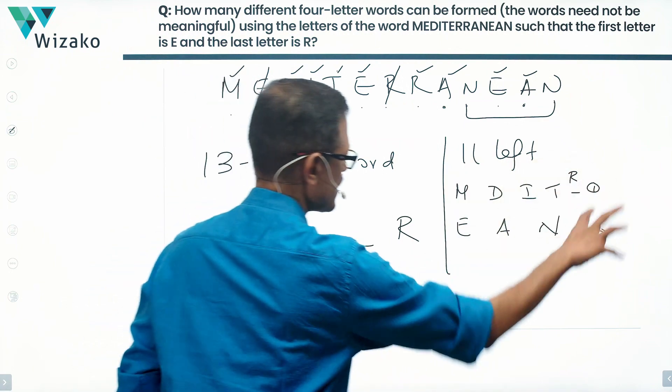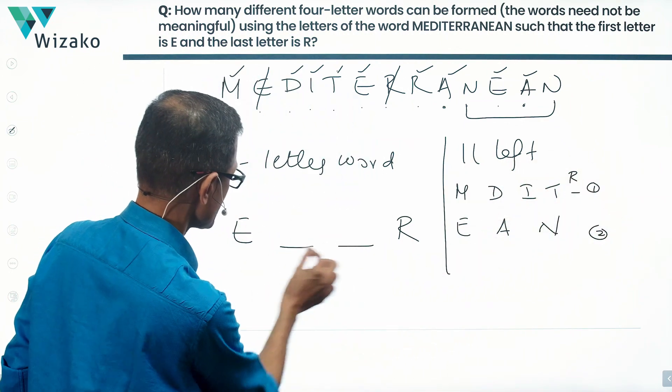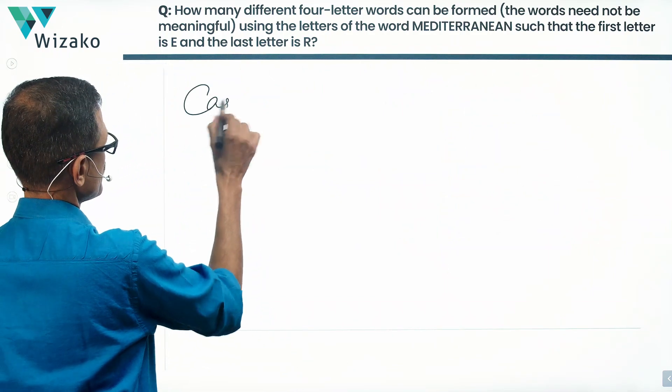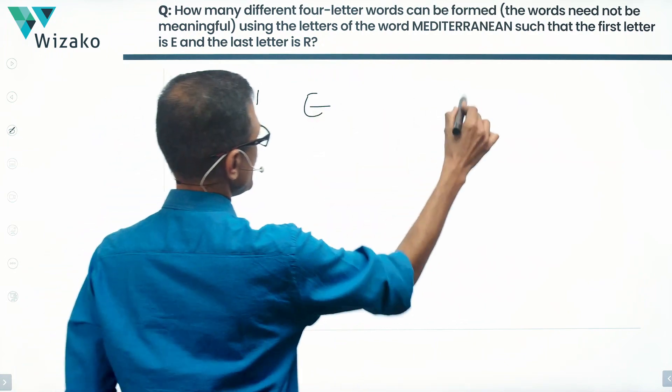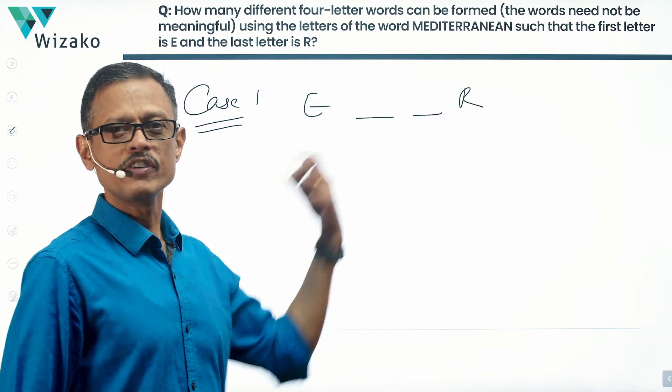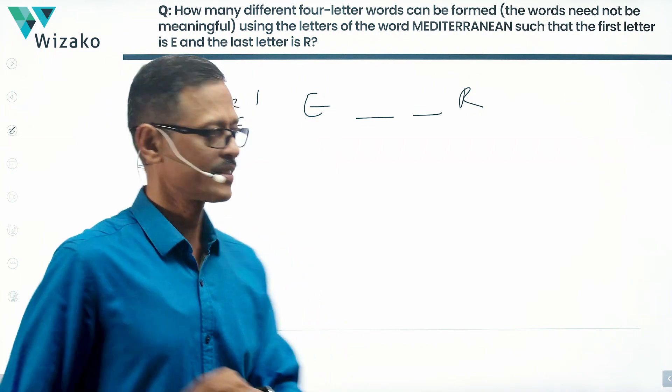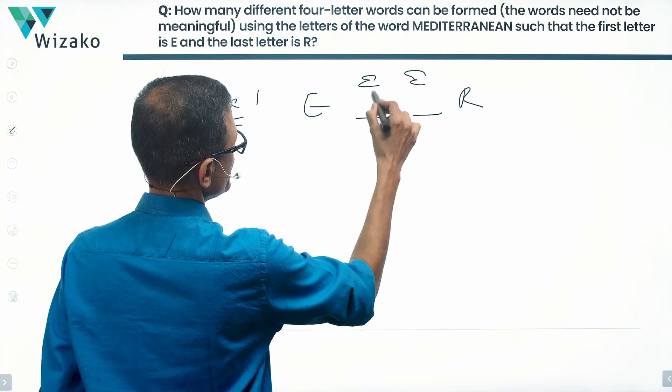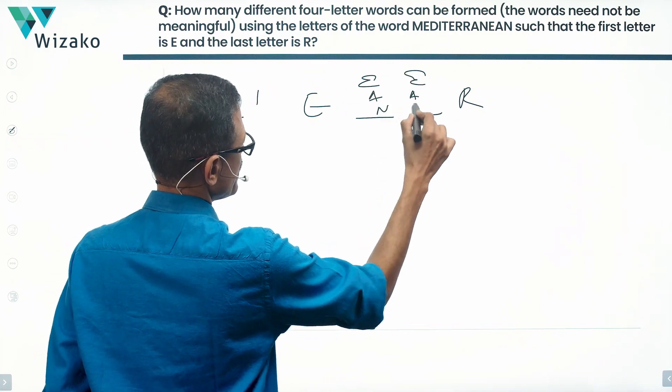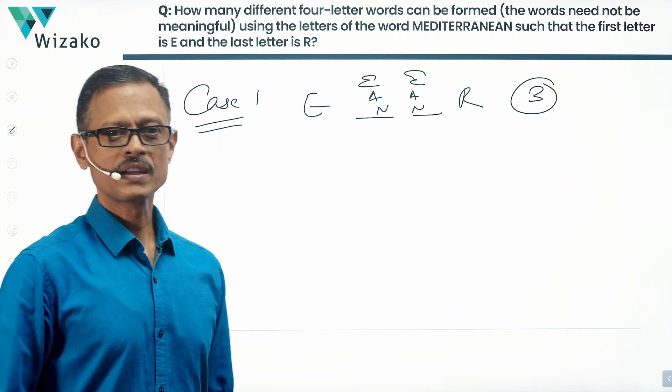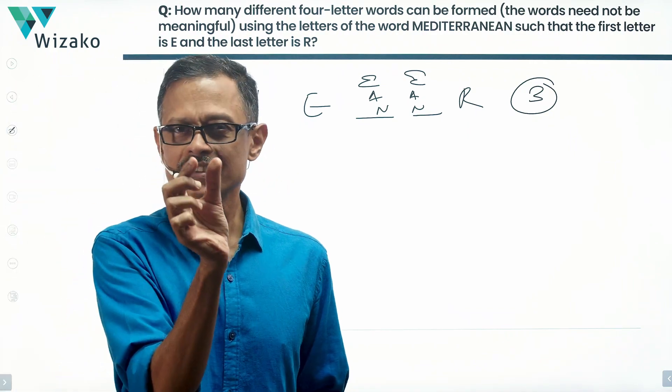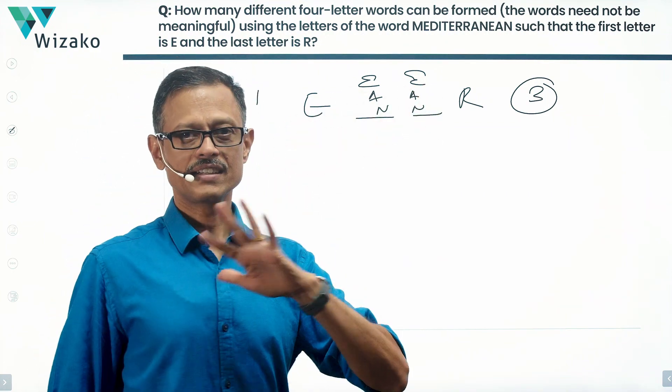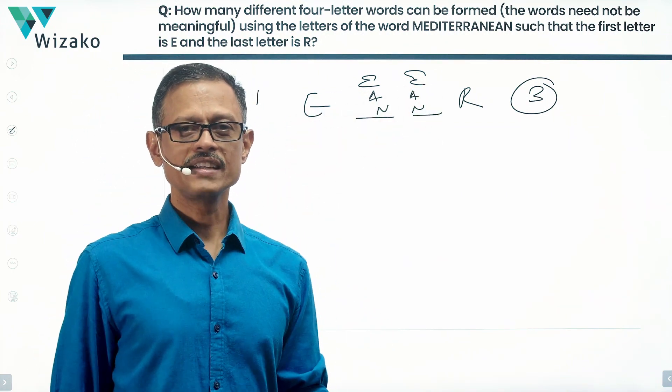Now from these 11 letters, we need to select two letters and place them in the middle positions. How many ways can it happen? Case one: it is E underscore underscore R, and the middle is filled by letters which are appearing twice - E, A, N. So it could be E, E or A, A or N, N. There are only three such possibilities. E is the first letter, R is the last letter, and you're filling the second and third with letters that repeat. So three such rearrangements are possible.